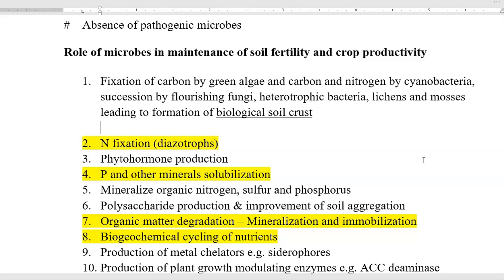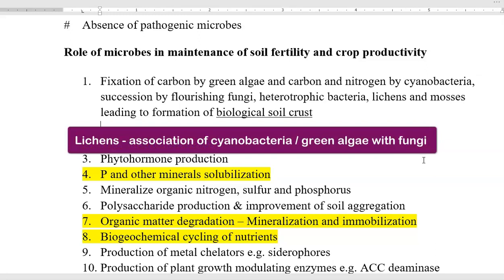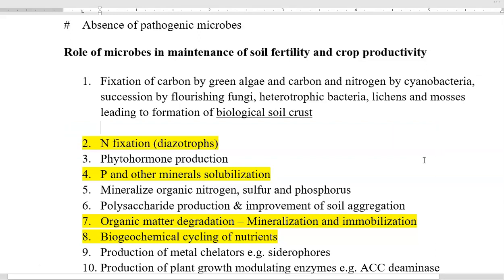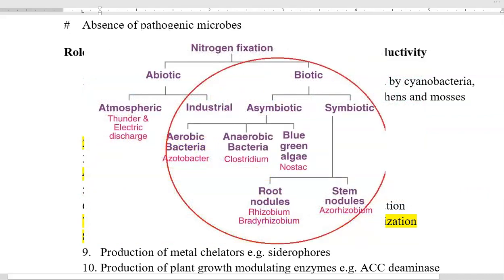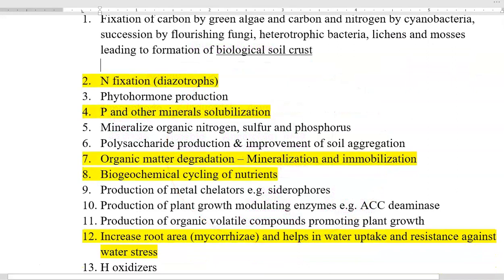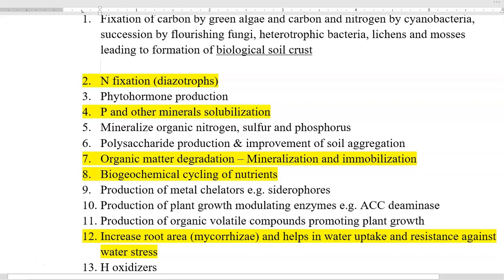Cyanobacteria have the ability to fix both carbon and nitrogen. After the availability of carbon and nitrogen in an ecosystem, it will start flourishing with other groups of organisms such as fungi, heterotrophic bacteria, and lichens. Lichens have an association of cyanobacteria or green algae and fungi, and mosses — all leading finally to the formation of a biological soil crust. Points highlighted in yellow are going to be elaborated in coming classes. When answering this 10-mark question, you can list the 19 points and explain a few in detail.